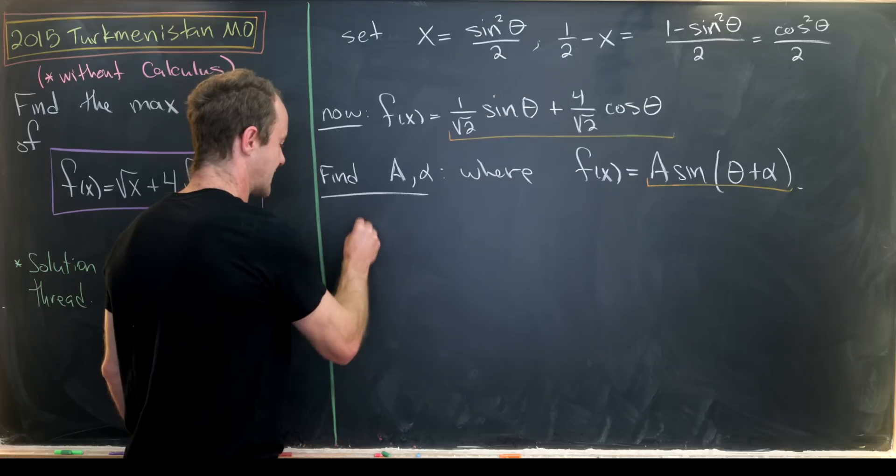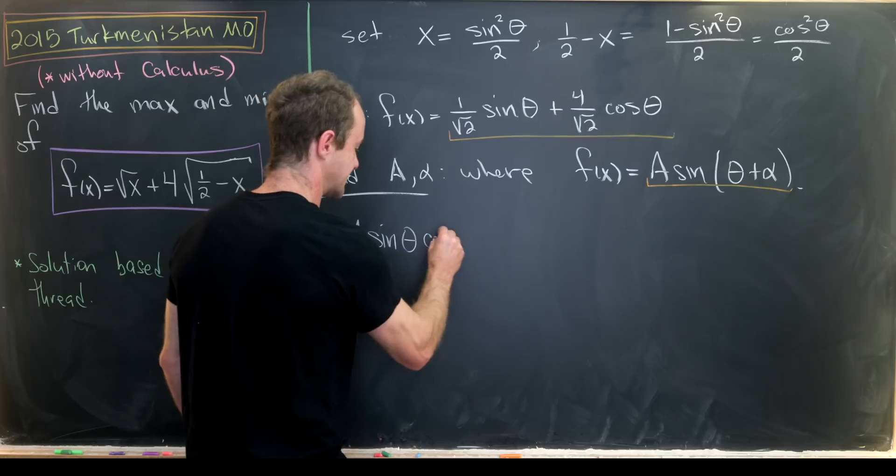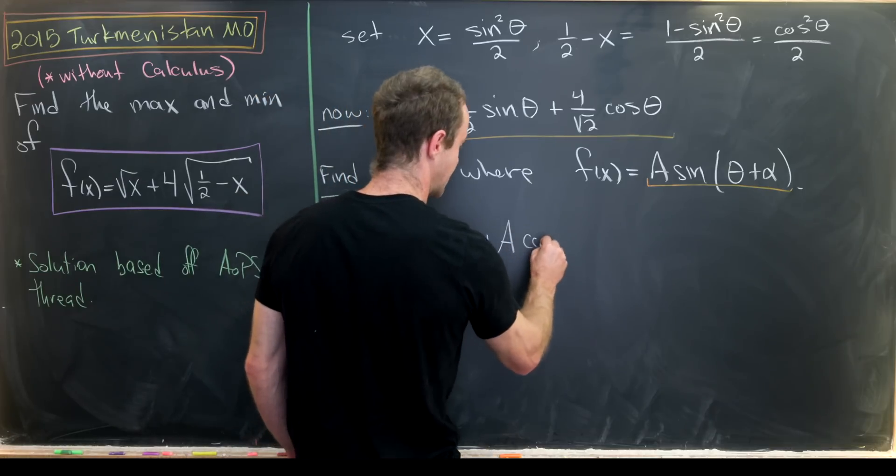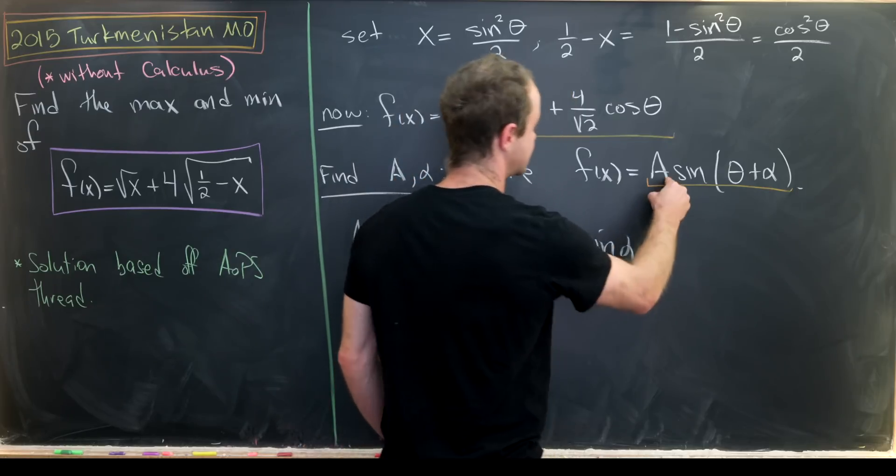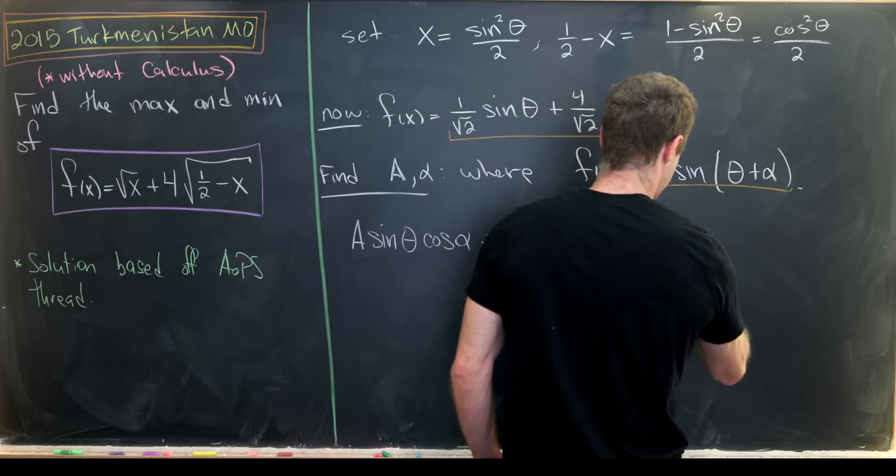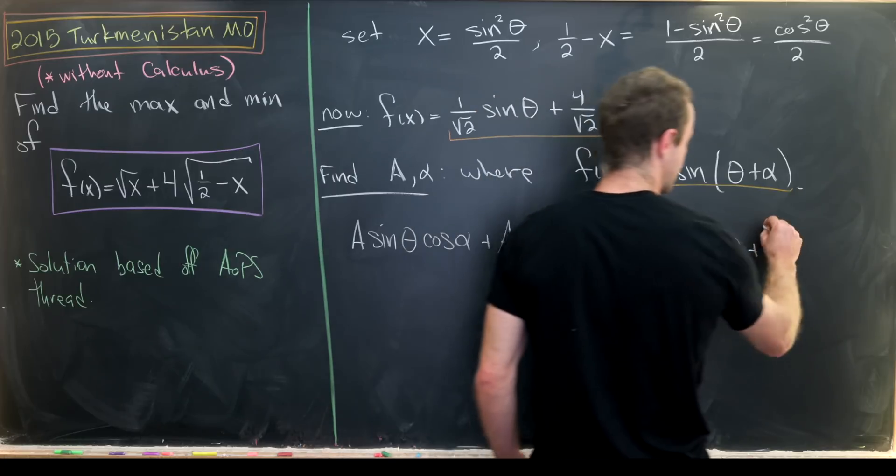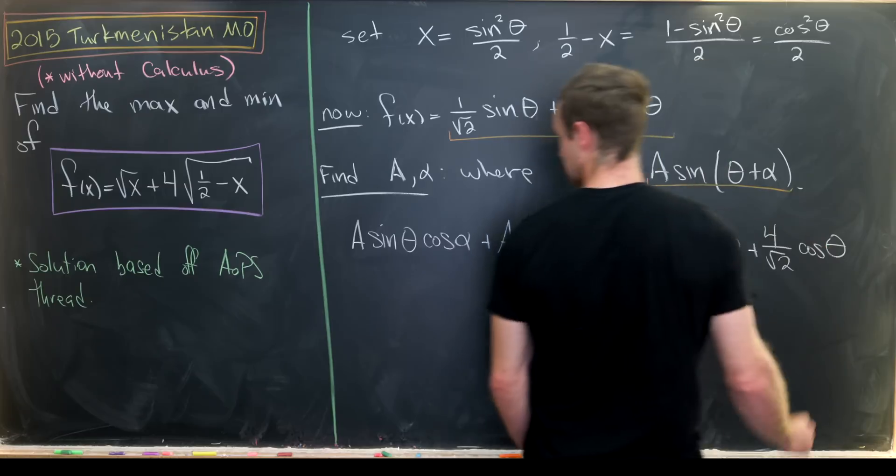So that's going to leave me with something like a times the sine of theta times the cosine of alpha plus a times the cosine of theta times the sine of alpha. So that's my expansion of my sum angle formula is equal to one half times the sine of theta. Sorry, one over the square root of two plus four over the square root of two times the cosine of theta.